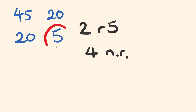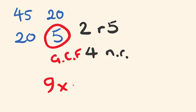Now divide the greatest common factor into one of the original numbers: 5 into 45 goes 9 times. Then multiply by the other number: 9 times 20 — the LCM is 180.